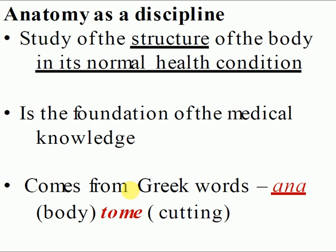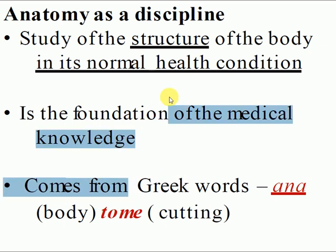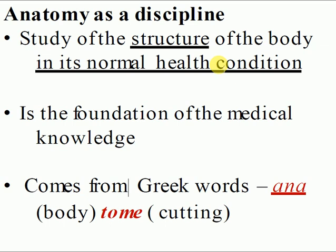Anatomy, by definition, is the study of the structure of the body in its normal health condition. We will discuss clinical cases and diseases, but anatomy focuses on the normal structure. In anatomy, we first need to know how an organ or cell appears in its normal structure. After knowing the normal appearance, it is easier to determine — for example using microscopy — whether a cell is normal or abnormal.